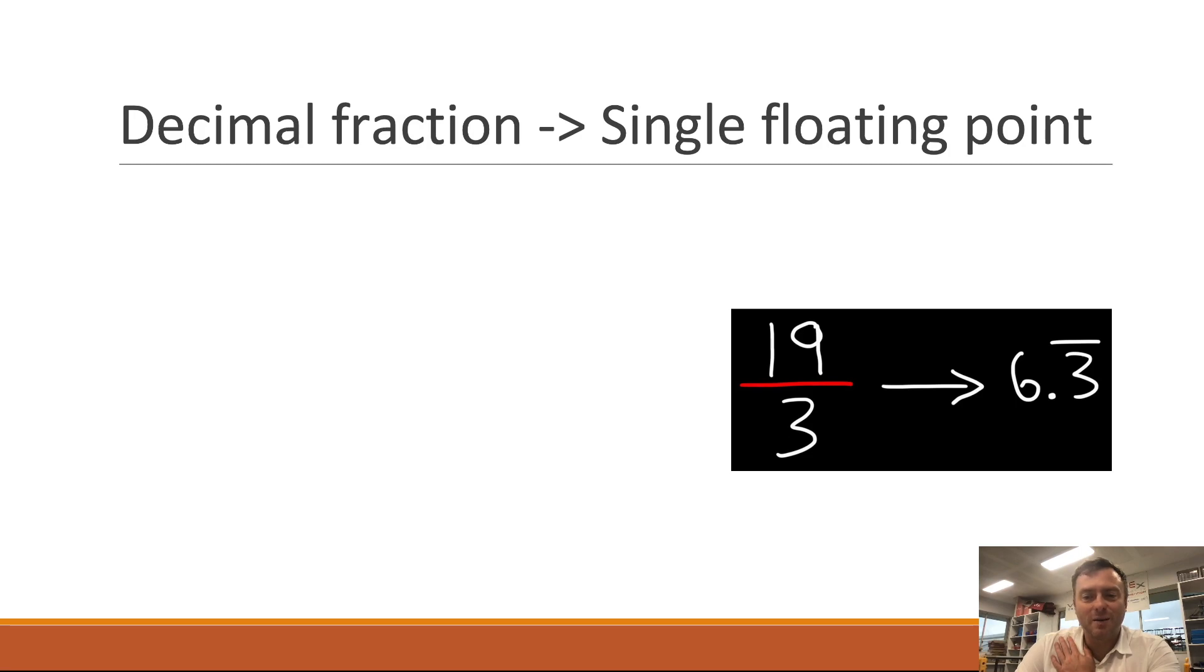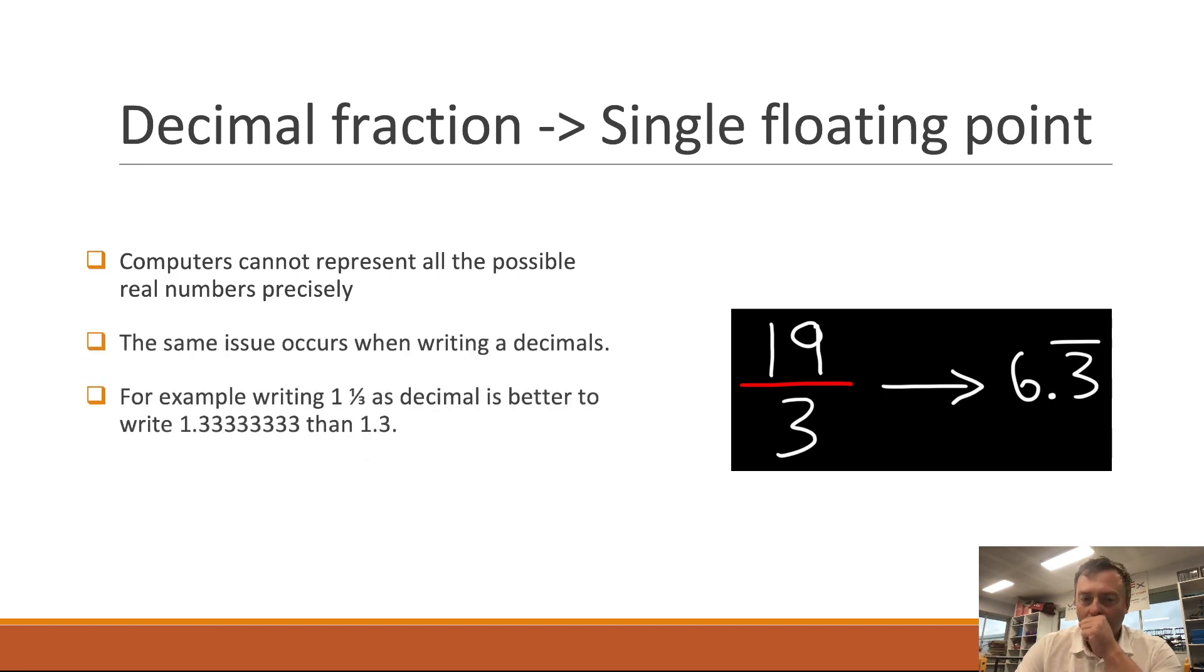When you do a decimal fraction, so for example 19 divided by 3 is actually 6.333333 recurring, and floating point numbers can't handle that precision. So the same error occurs when we're writing these decimals. So 1 over 1/3rd is better to write as 1.3333 because that's way more accurate than just writing as 1.3. So this is what we call precision. So the more decimal points after the decimal place the more precise it is.